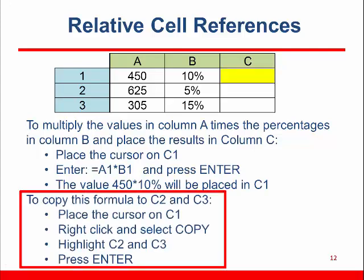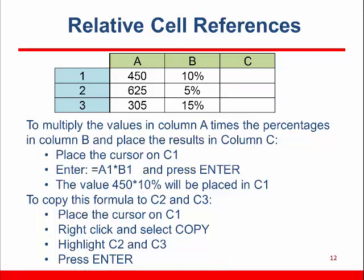Place the cursor on C1, right-click, and select Copy. Highlight C2 and C3, and press Enter. The formula from C1 will be copied to C2 and C3. The formula entered in C1 is equal to A1 asterisk B1, and it's interpreted as multiply the value in the cell 2 to the left of where I am times the value in the cell 1 to the left. When the formula is copied down column C, the formula is modified relative to the destination cell, so C2 will read A2 times B2, etc.